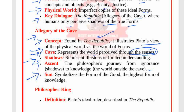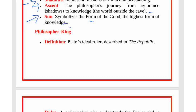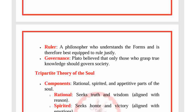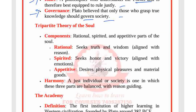The sun symbolizes the form of the good and the highest form of knowledge. The philosopher king is Plato's ideal ruler, described in The Republic — a philosopher who understands the forms and is therefore best equipped to rule justly. Plato believed that only those who grasp true knowledge should govern society.